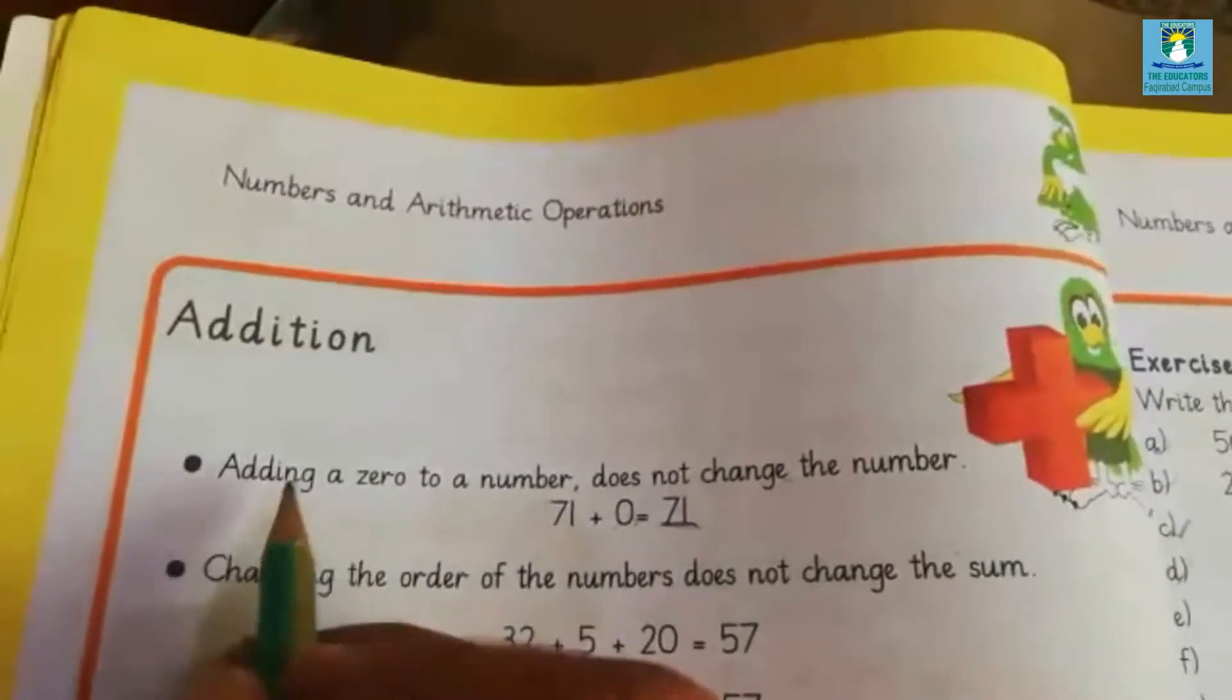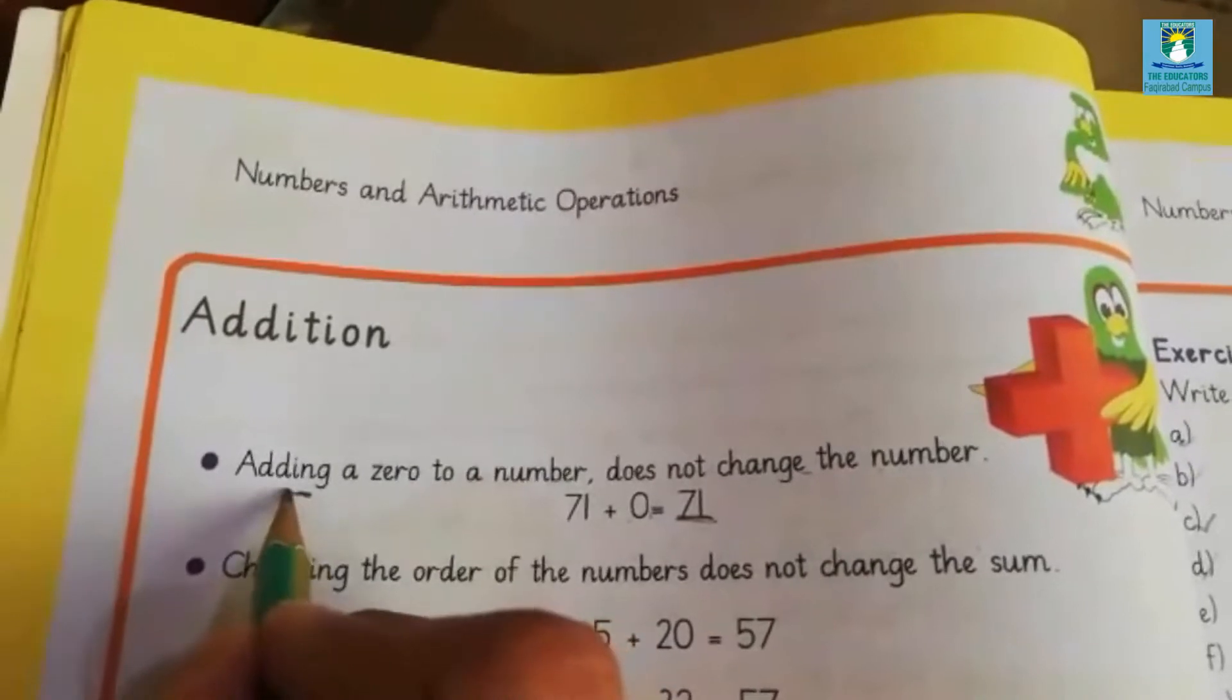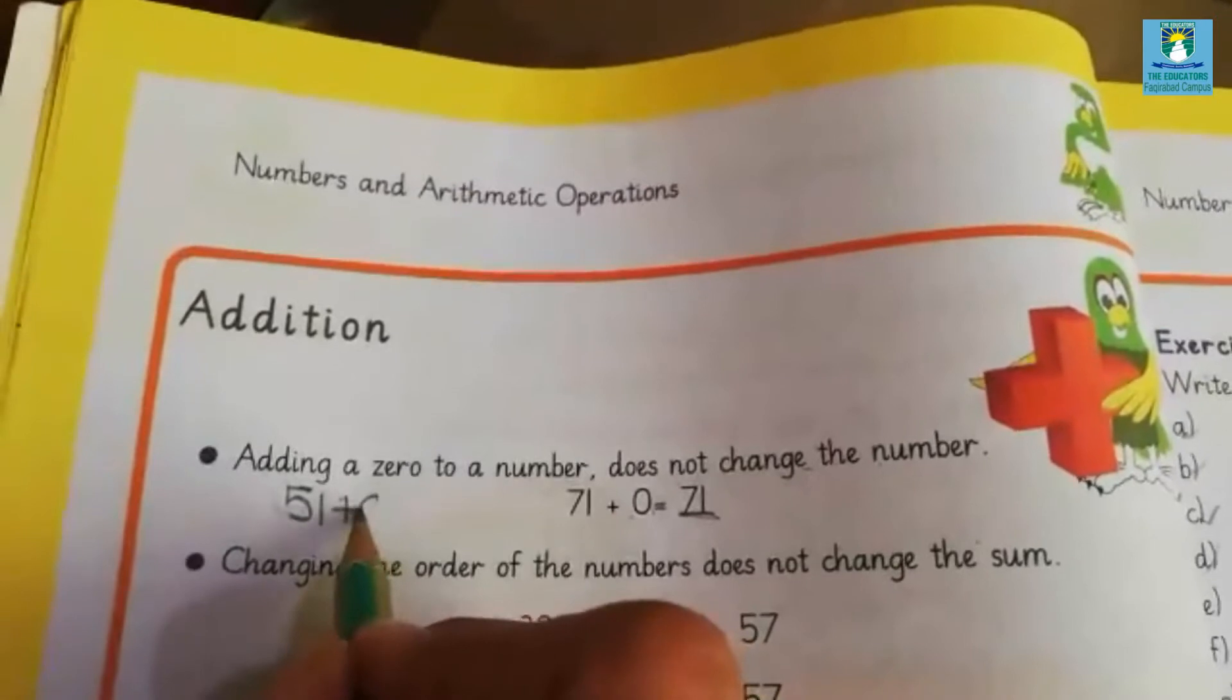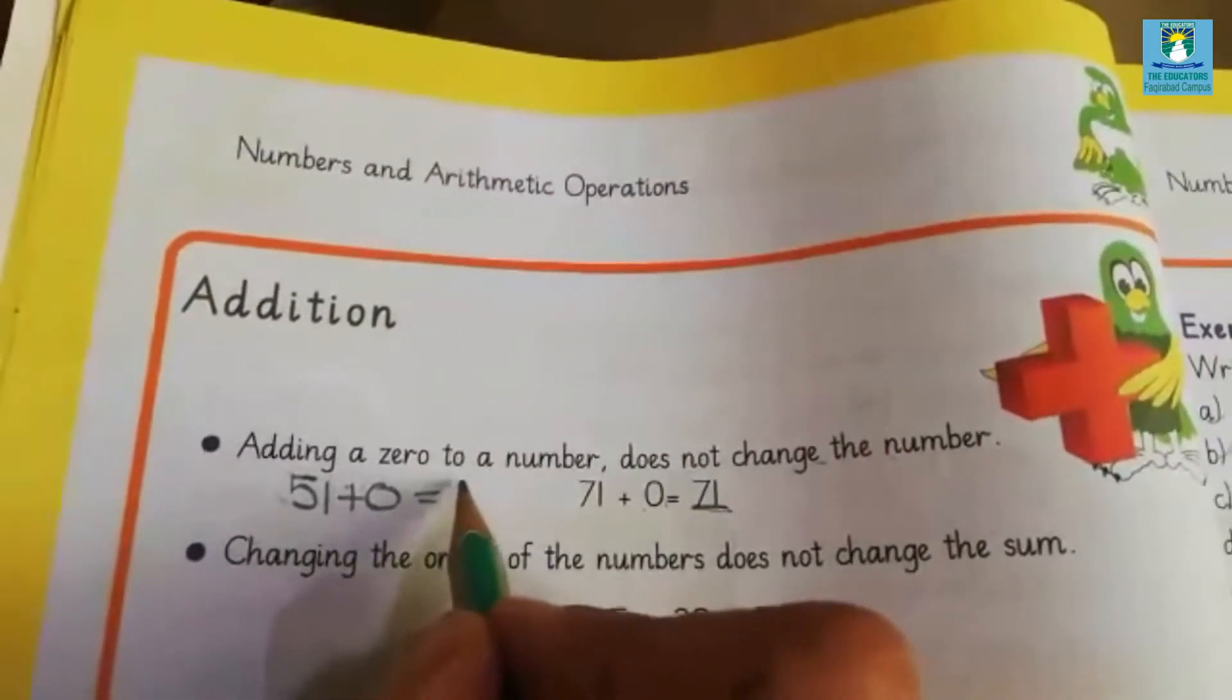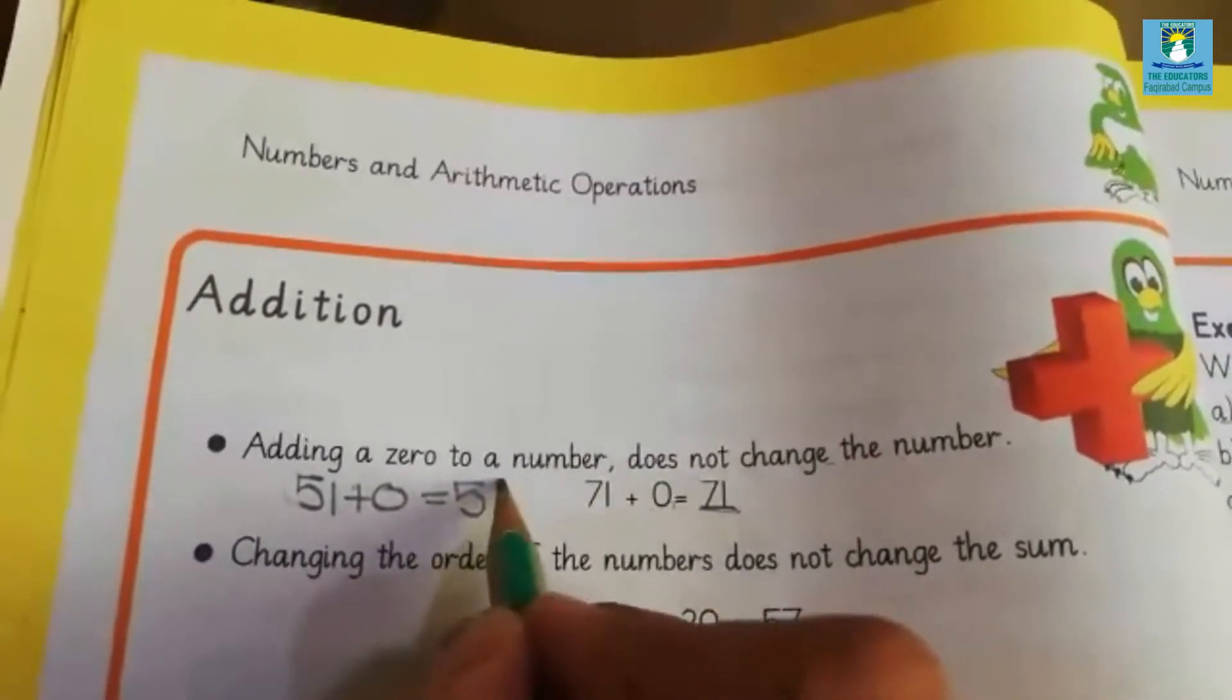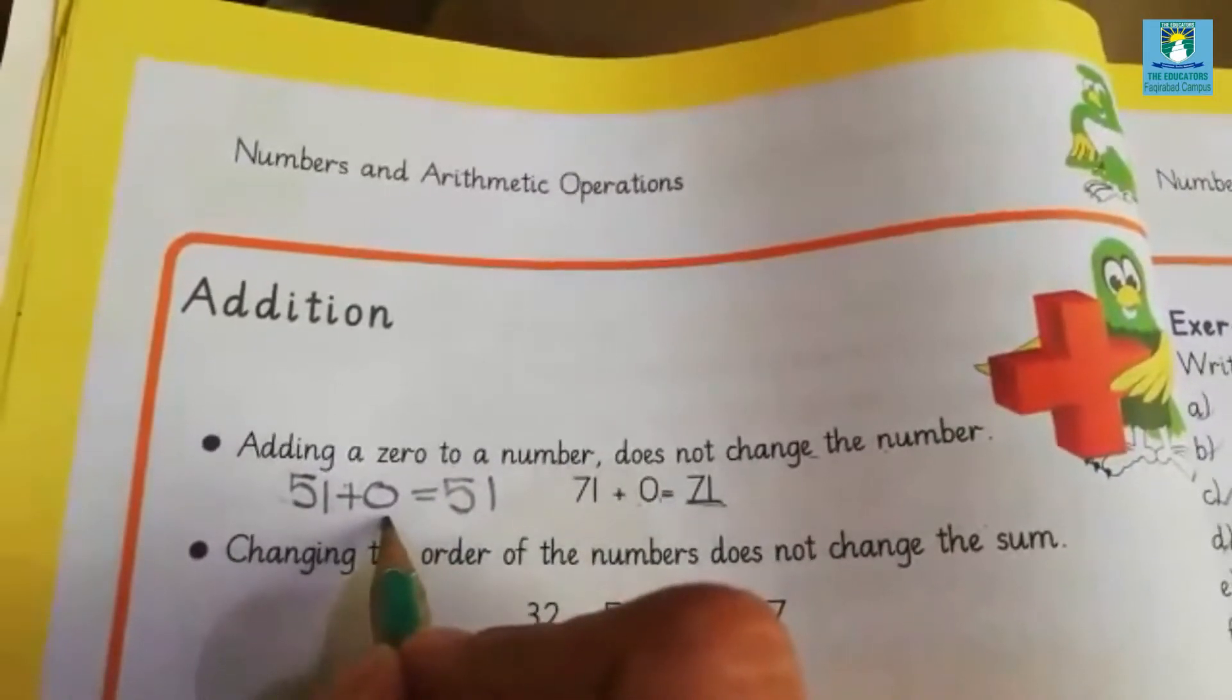If we add 0 in 71, what will be the sum? The sum is 71, it doesn't change the number. Look at here, if I have a number 51 and I add 0 with 51, what will be the sum? 51. 51 plus 0 is equal to 51. So adding a 0 to a number doesn't change the number.